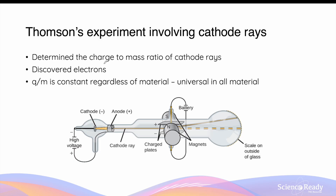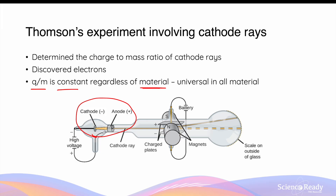Thomson's experiment involving cathode rays led to his discovery of electrons. In this experiment, he used electric and magnetic fields to determine the charge-to-mass ratio of cathode rays, which confirmed the particle nature of cathode rays — as we now know them as streams of moving electrons. Thomson also showed that the charge-to-mass ratio of these electrons is constant regardless of the metallic material used as the cathode to produce a cathode ray. This led him to conclude that electrons are subatomic particles that are universal, meaning present in all materials.